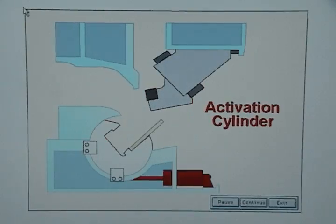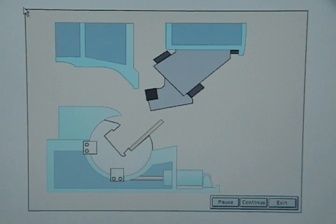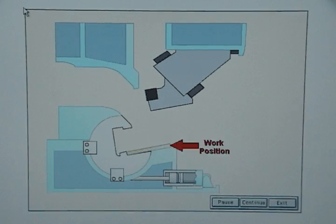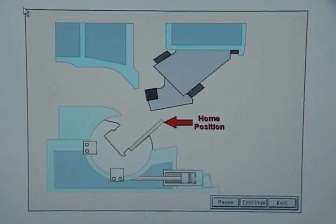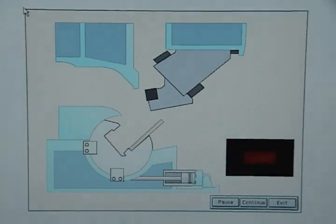The activation cylinder is used to move the rotor to its work position and back to its home position. The activation cylinder operates when the press reaches two program positions.